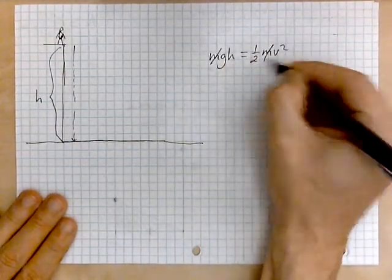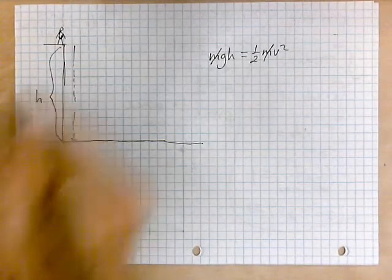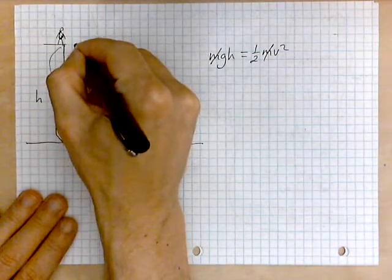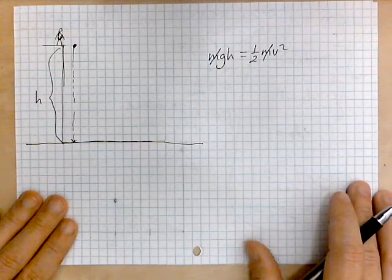The M's cancel from both sides which means it does not matter whether you are dropping a marble, a person, or an elephant. The velocity is the same in all cases.